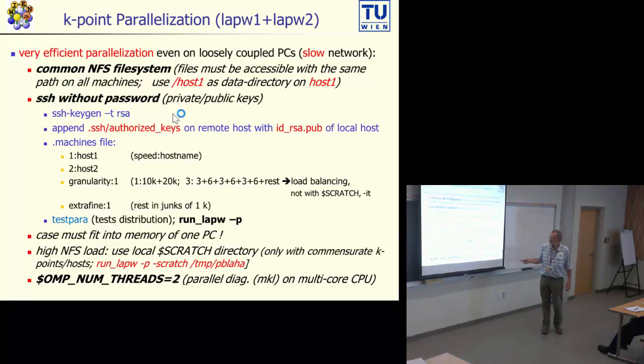With testpara you can test your distribution, how you will distribute the k-points. You activate the parallelization once you have created this machines file with the switch -p, or by clicking on this parallel item in Win2web. During the exercises, you have a few exercises later on where you should do this parallelization, and you can explore how simple, at least using it, it is once that has been set up.